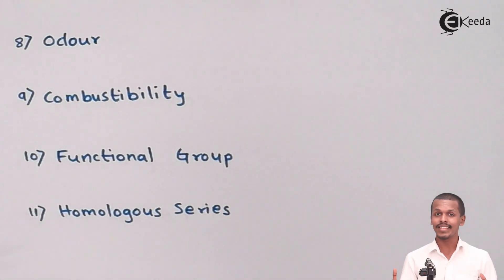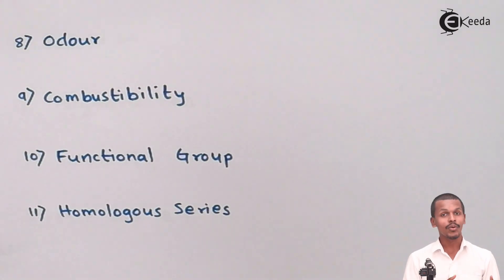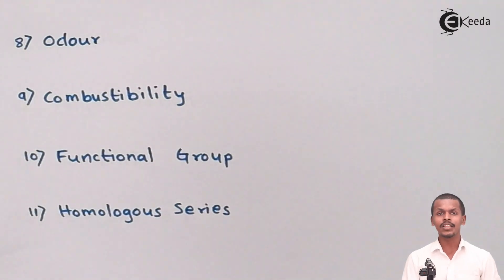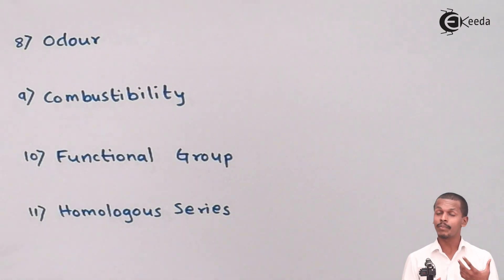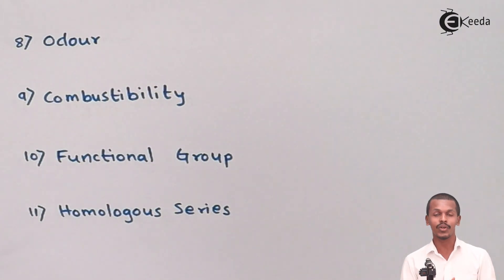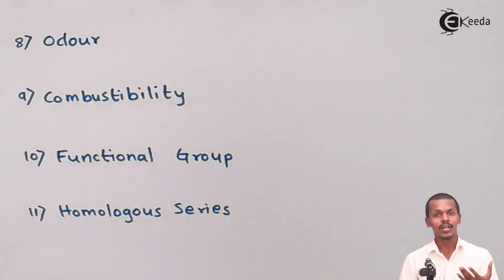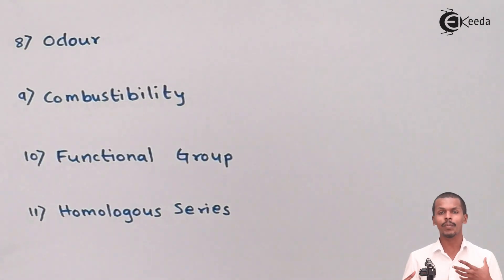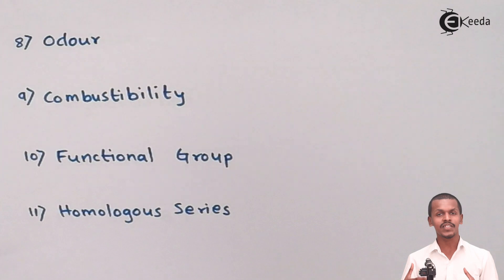Not every organic compound has a distinct odour, but it is still a characteristic of organic compounds from which we can detect them. Next is Combustibility. Combustibility is the property by which an organic compound undergoes a combustion reaction — that is, a reaction in the presence of oxygen that gives off heat. Most organic compounds show combustion reactions with evolution of heat or thermal energy.